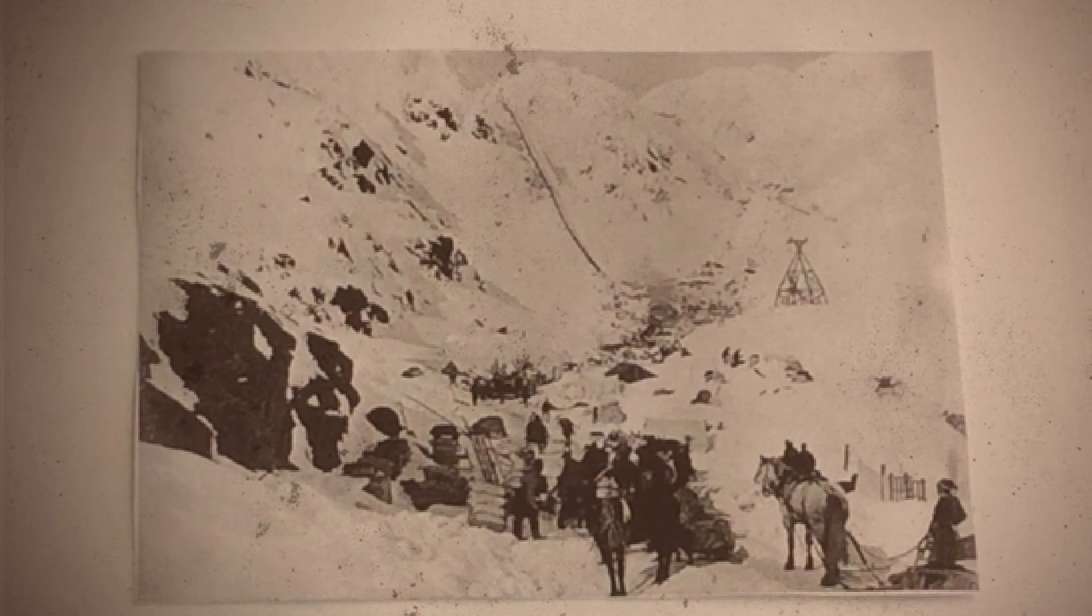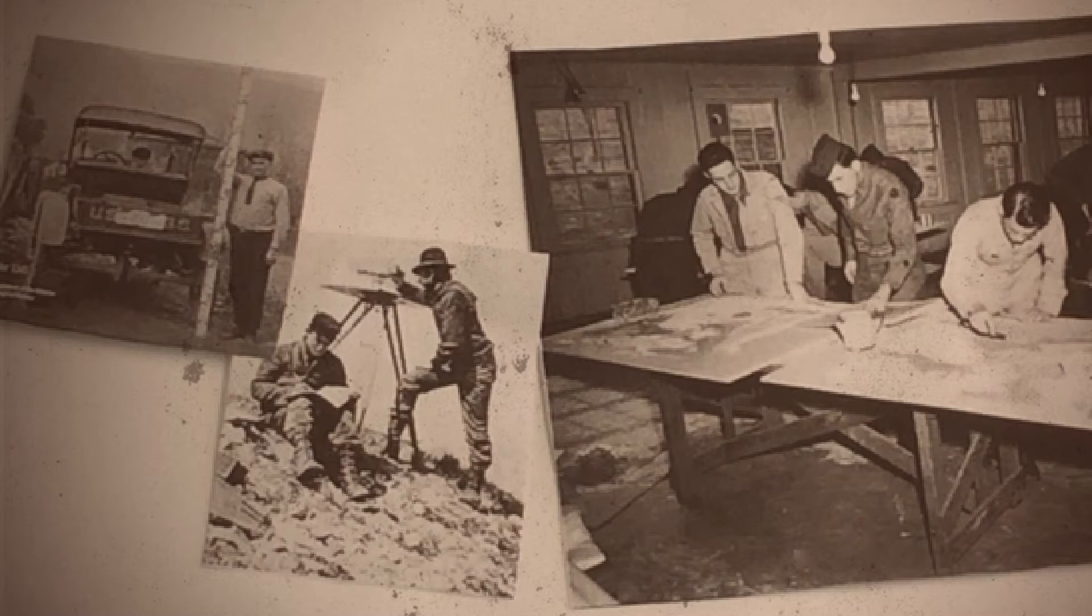Topography used to be mapped by sending pack mules and artists to draw the different land features. Then automobiles were produced, making it a little bit easier to get up and down and around the land. The government also wanted topographic maps so they could sneak around during war easier. So they were making maps too.